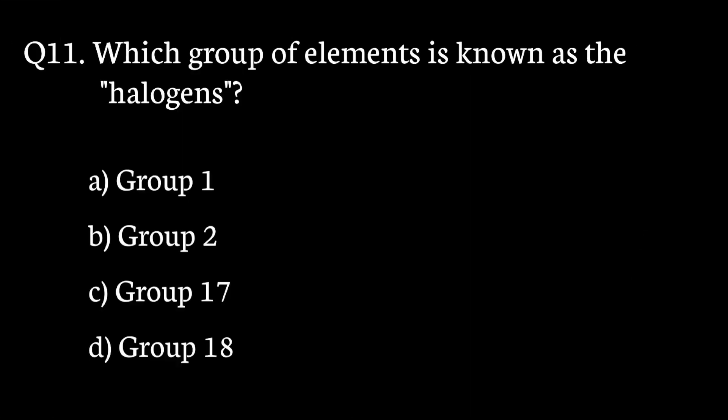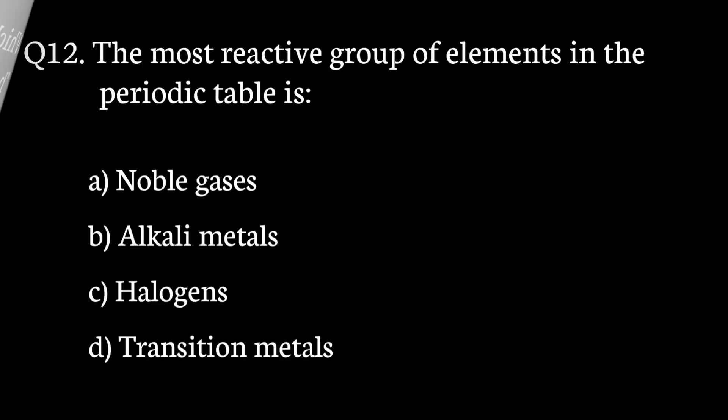Question number 11. Which group of elements is known as the halogens? The correct answer to that question is option C. Group 17.